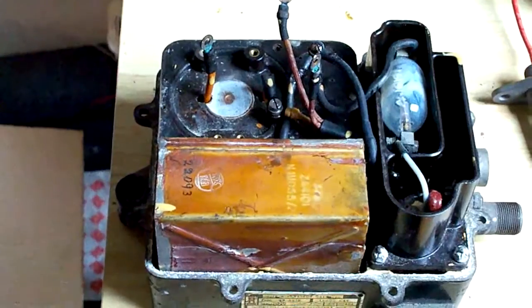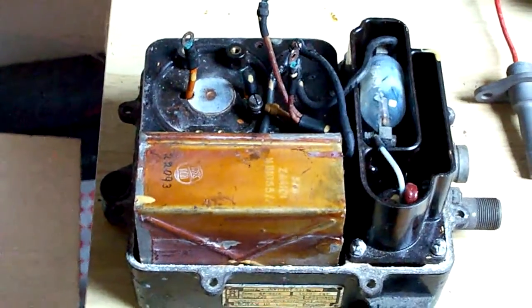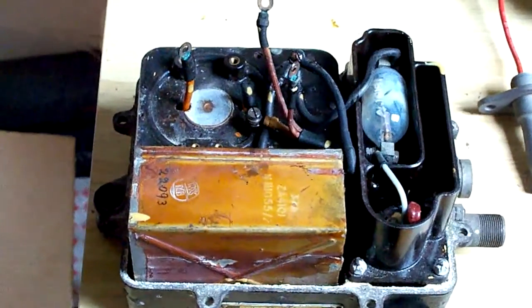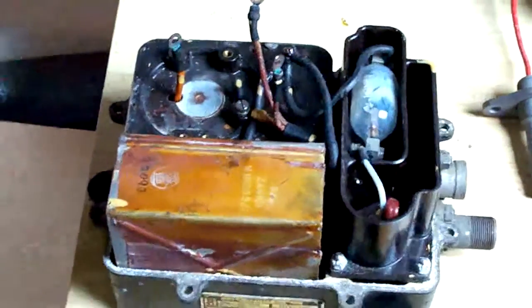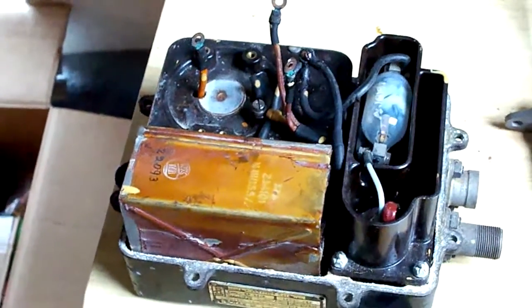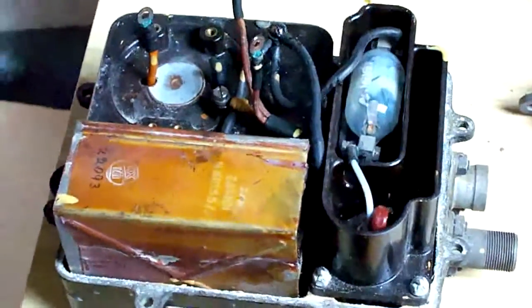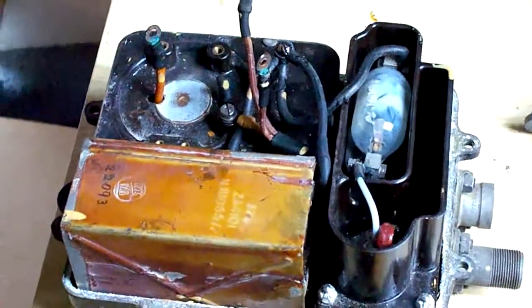The trembler switch, which converts the DC voltage into an alternating current to allow the transformer to work, has been removed. This particular box has been quite gutted and is not working.